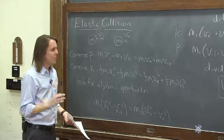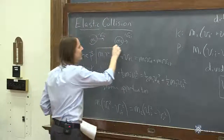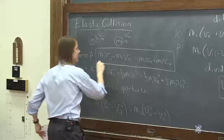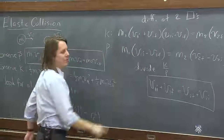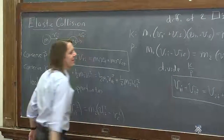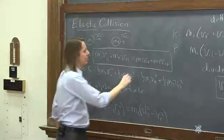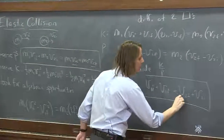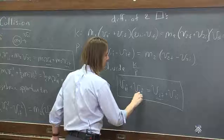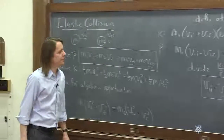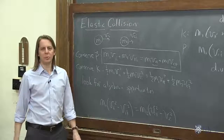So now you have two equations and two unknowns. You can still use the momentum equation, and this simplified relation replaces the messy squared energy equation. Next we'll show you how to bring this all the way down to useful final expressions for V1f and V2f.